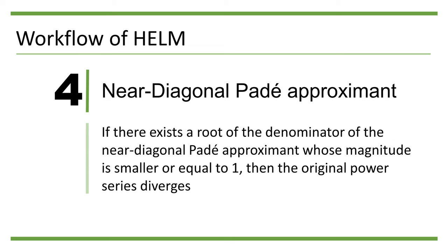If there exists a pole of the Padé approximant whose magnitude is smaller or equal to 1, then the original power series diverges.